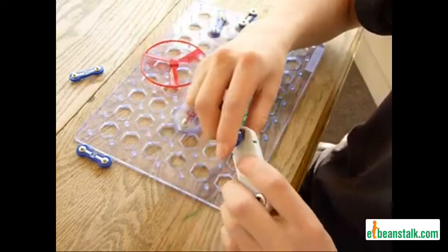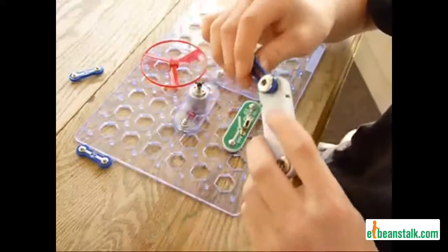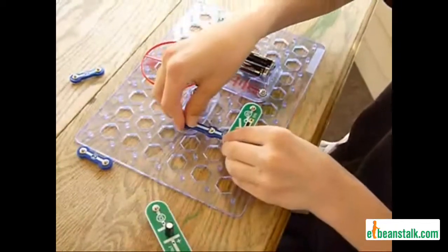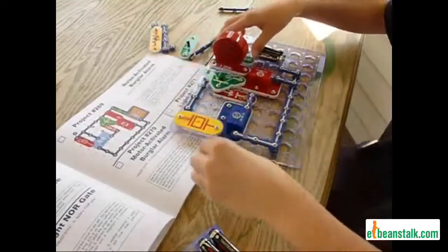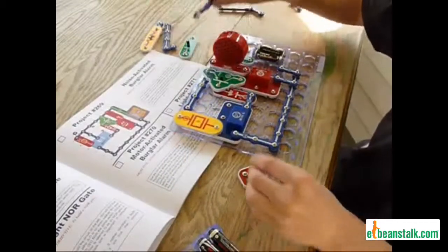Snap Circuits kits are a great introduction to electricity. The easy snap-together pieces allow you to create electrical circuits without wires or soldering. Kids can spend hours working on the projects in the manual or building their own electronic devices.